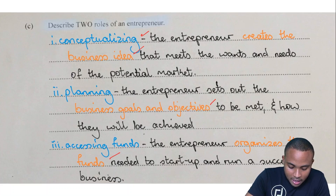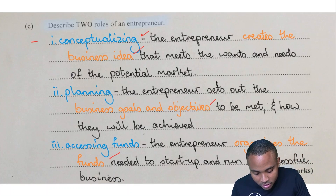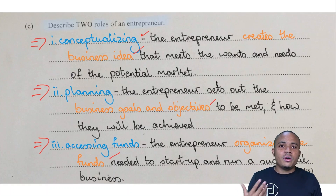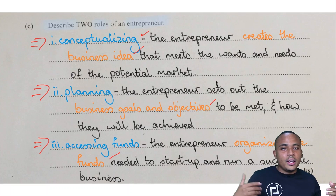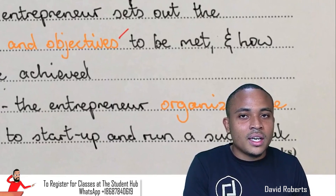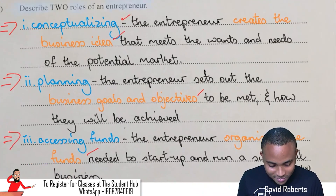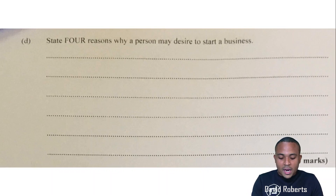The third role is accessing funds — the entrepreneur organizes the funds needed to start up and run a successful business venture. These points come straight out of the syllabus; however, the explanation comes from your textbook or from your class notes. If you're not in the student hub yet, it's about time to get in so you can get the notes.